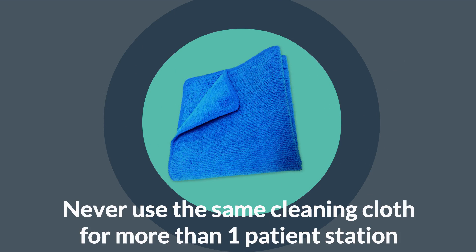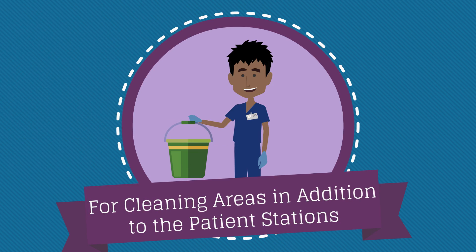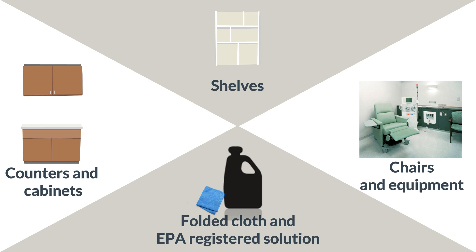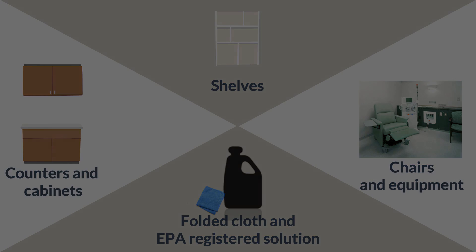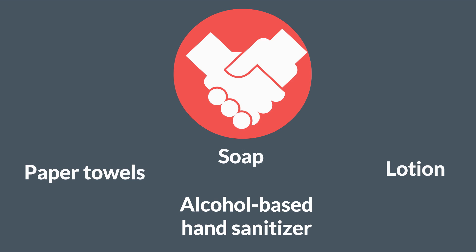Never use the same cleaning cloth for more than one patient station. Never re-dip a used cloth into clean disinfectant solution. For cleaning areas in addition to the patient stations, clean and disinfect all horizontal and vertical surfaces in the dialysis treatment area, including cabinets, counters, shelves, dialysis chairs, and equipment using a clean multi-folded cloth and EPA-registered hospital disinfectant solution per manufacturer's instructions. Spot clean and disinfect walls. Wet mop the floor with an EPA-registered hospital disinfectant. Check and refill all hand hygiene product dispensers in nursing stations and at patient stations, including soap, paper towels, lotion, and alcohol-based hand sanitizer.